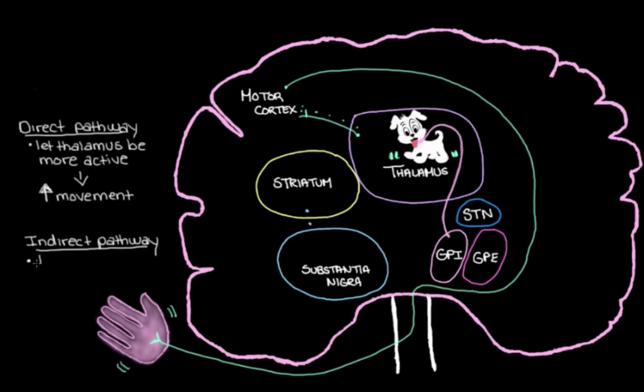And on the flip side, remember that the aim of the indirect pathway is to tighten that leash on our thalamus. And that's to reduce muscle movements. So maybe you made it to the other side and now you want to go from running to walking. So you want to slow down the muscle activity in your legs, so that you can slow down your steps and start to walk.